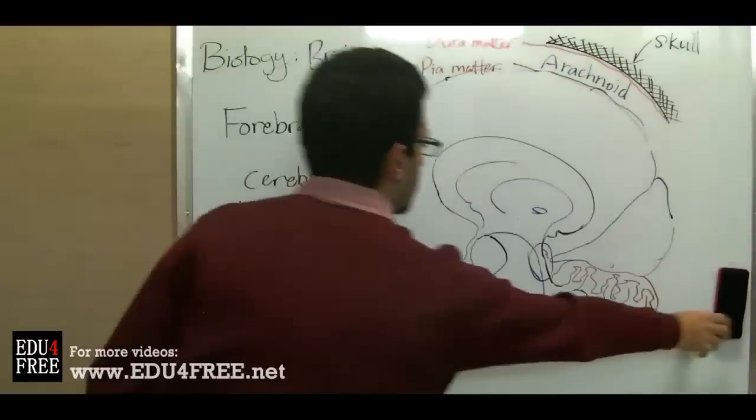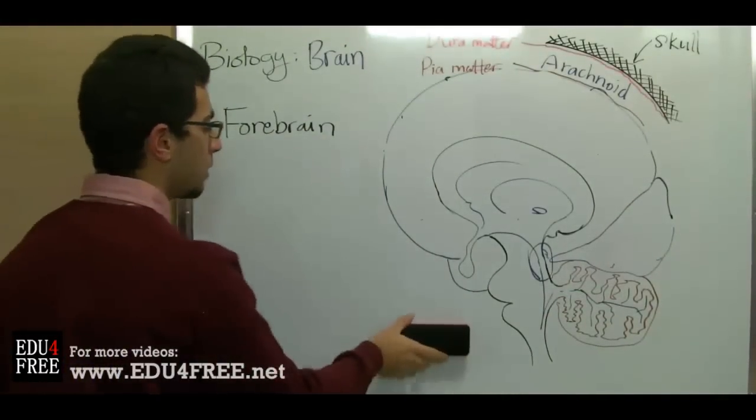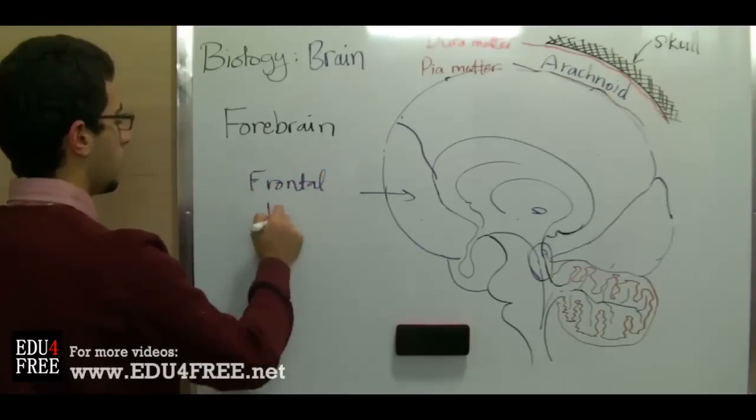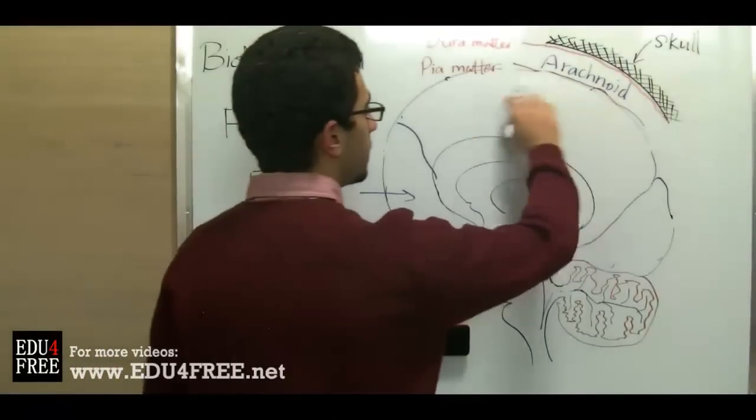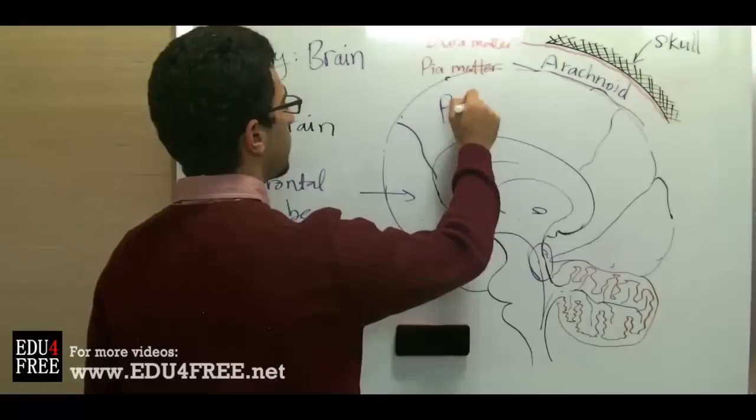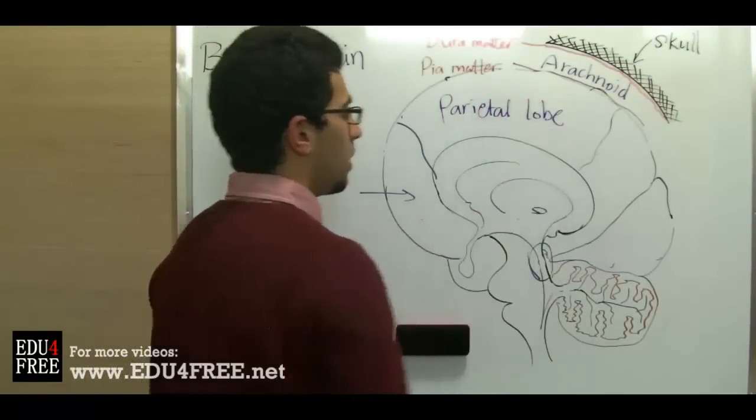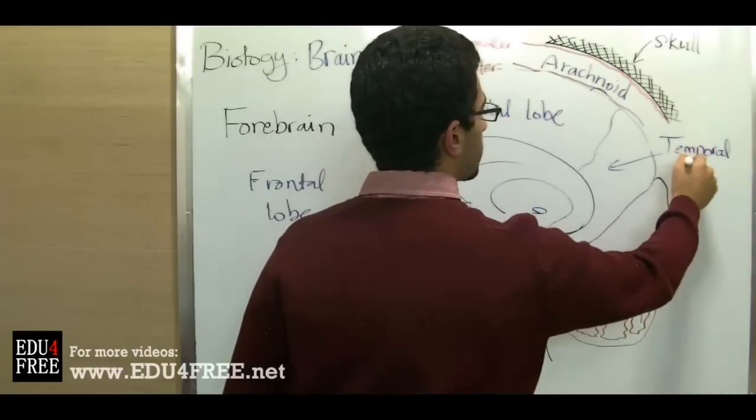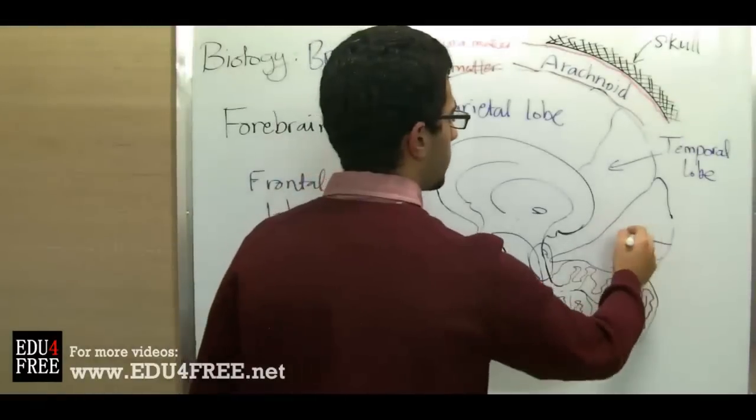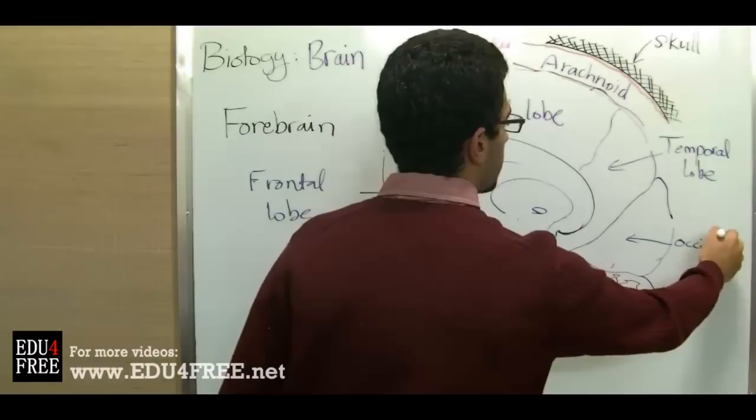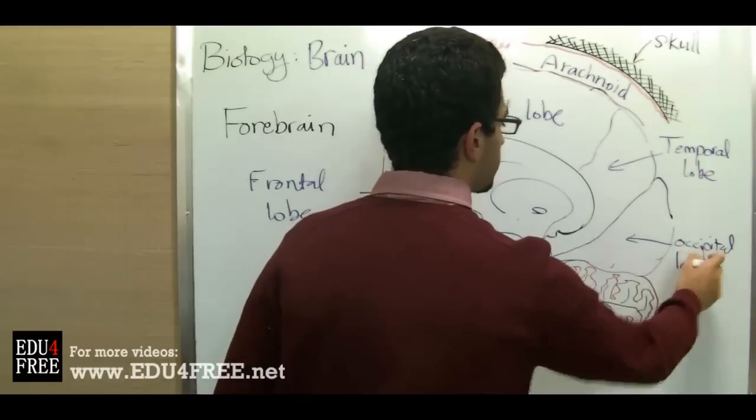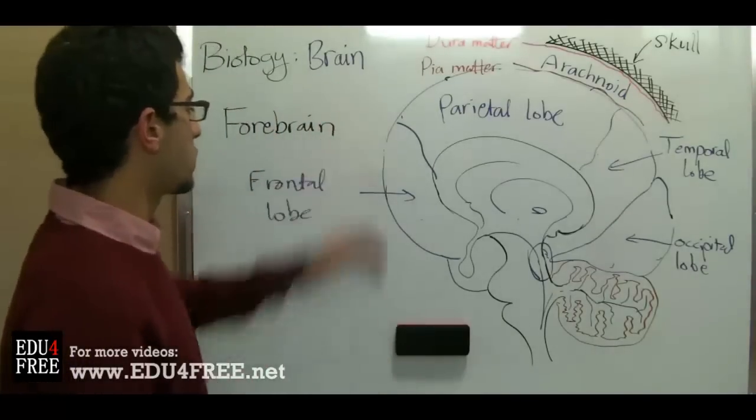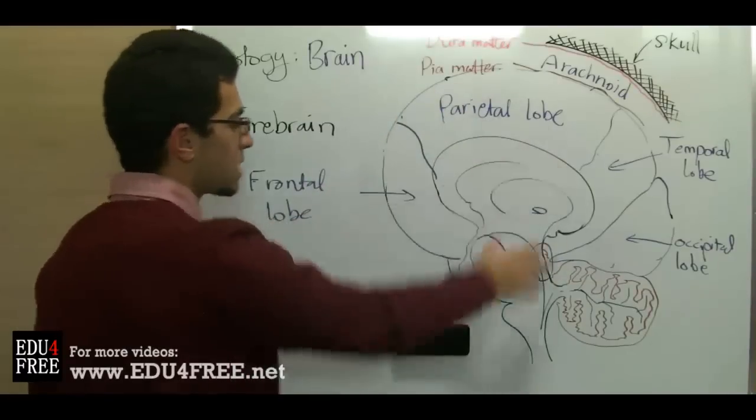First here we have the frontal lobe, because it's found in the front. Then at this side we have the parietal lobe, and this one is called the temporal lobe. At the back we have the occipital lobe, because this is related to vision. Between the frontal and the parietal lobe there is a fifth lobe called the island lobe, but it's immersed inside or between them, so it's not apparent from the side view of the brain.